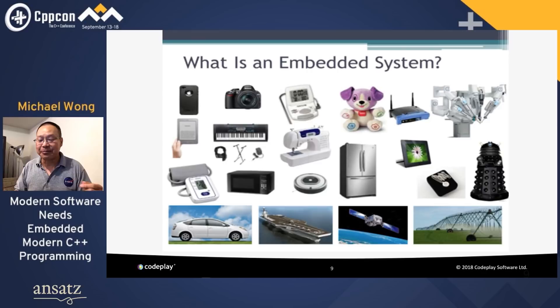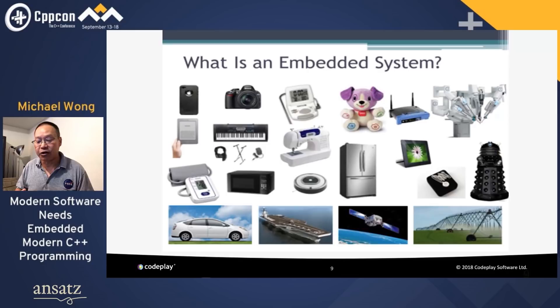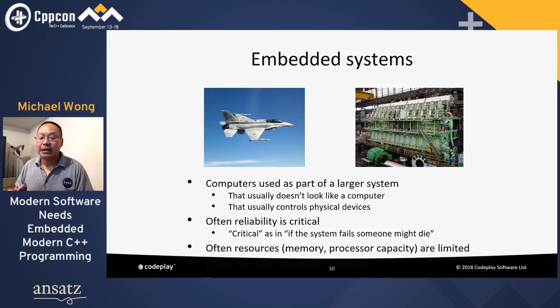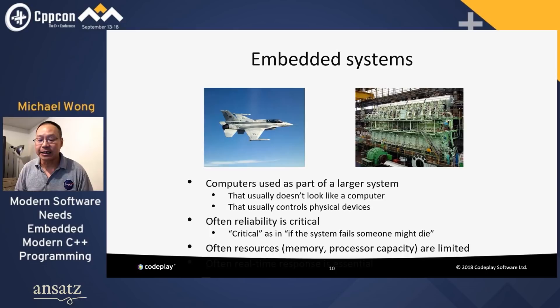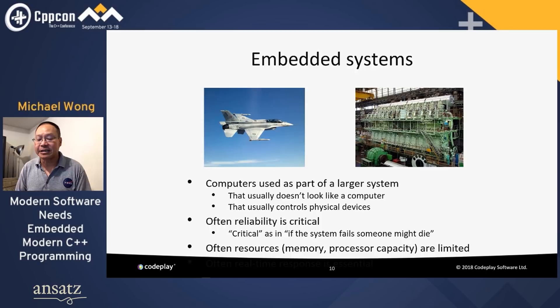There is a definition: it's a combination of hardware and software which together form a component of a larger machine. An example is a microprocessor that controls an automobile engine. This embedded system might be designed to run on its own without human intervention and may be required to respond to events in real time. We do know it's a computer used as part of a larger system, and these devices don't often look like a computer.